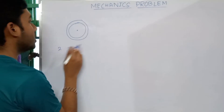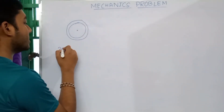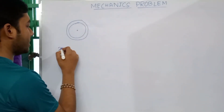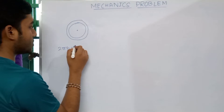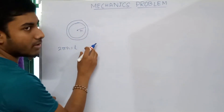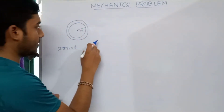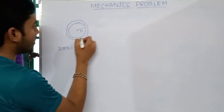This is our circular loop of string. The total length of the string is l, so 2πr = l, where r is the radius of this circle.